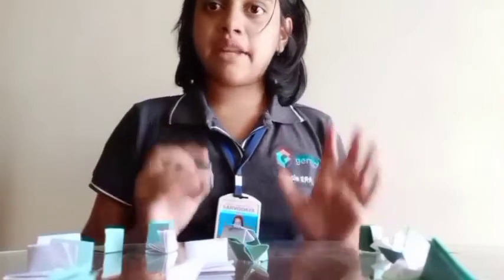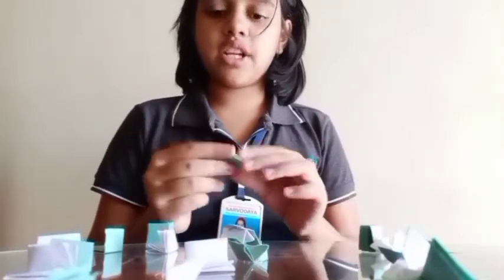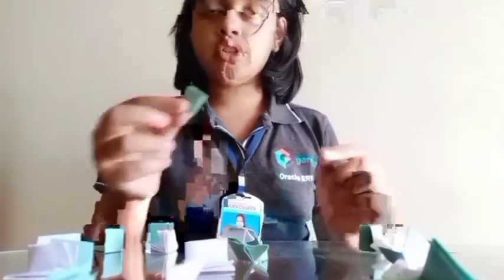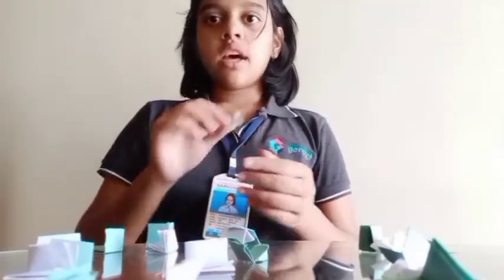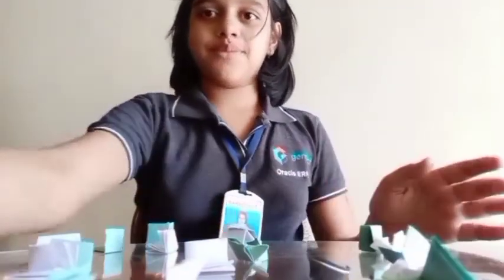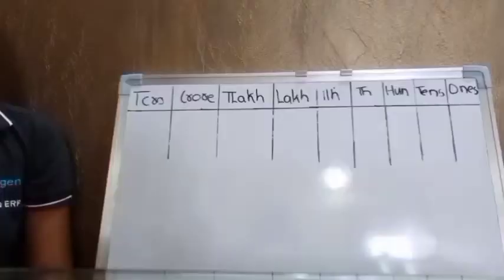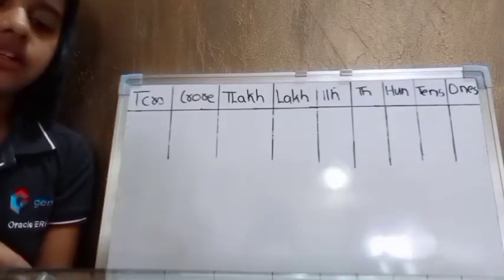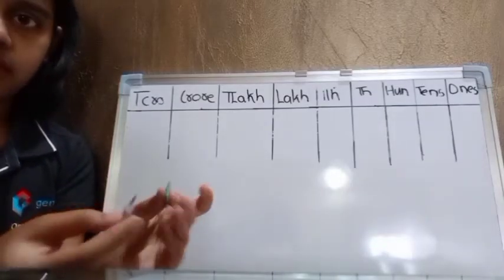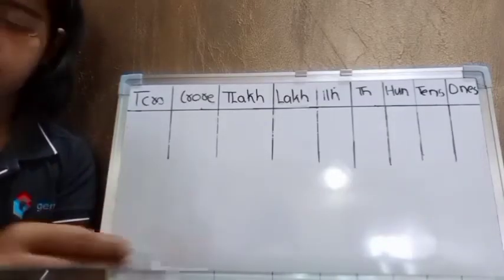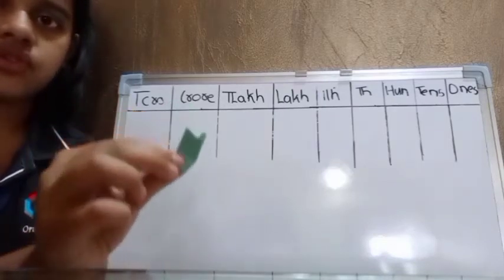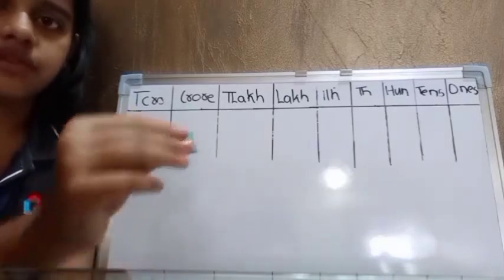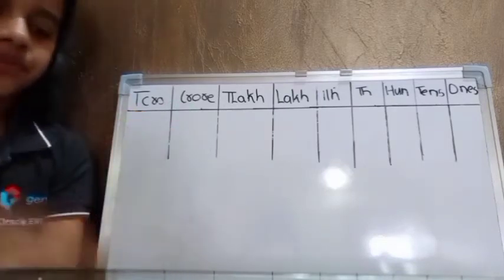Now after making the 9 pairs, one chit is remaining which is colored, so we have to keep it aside. Here we have made the pairs and they are ready, and the one extra chit we have kept aside.